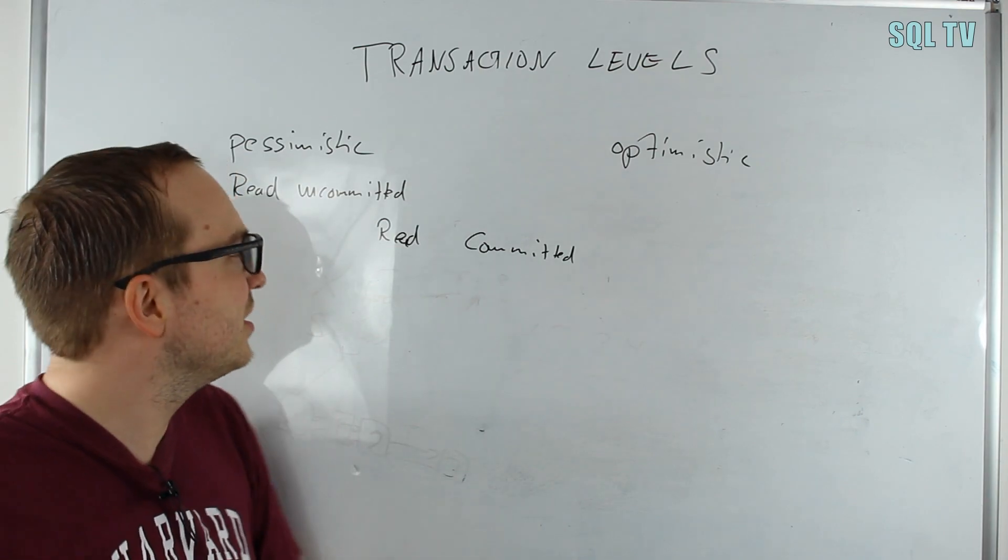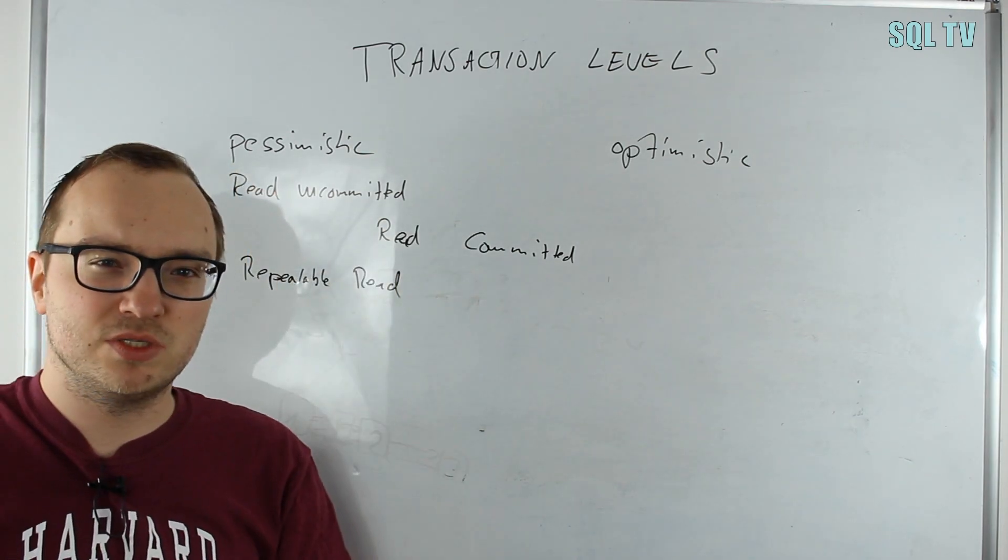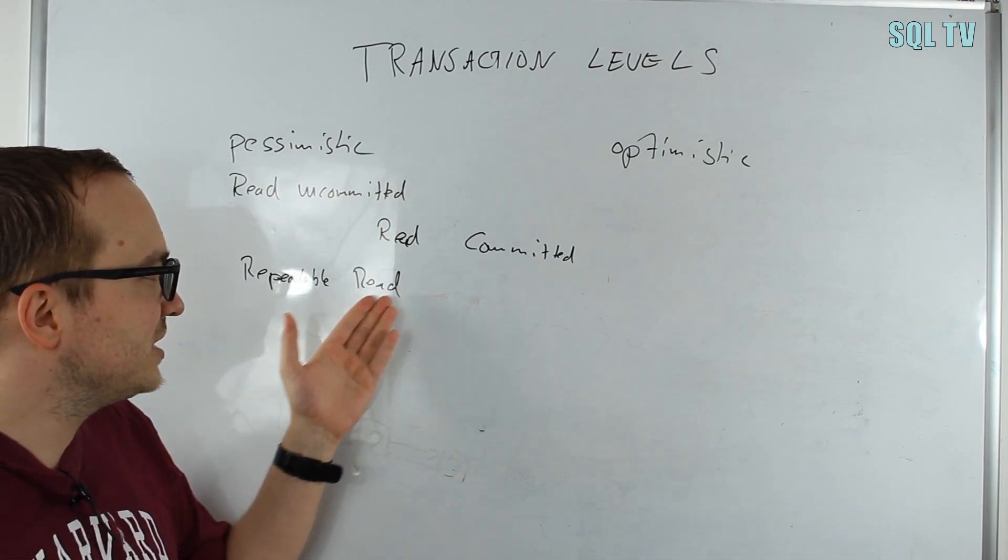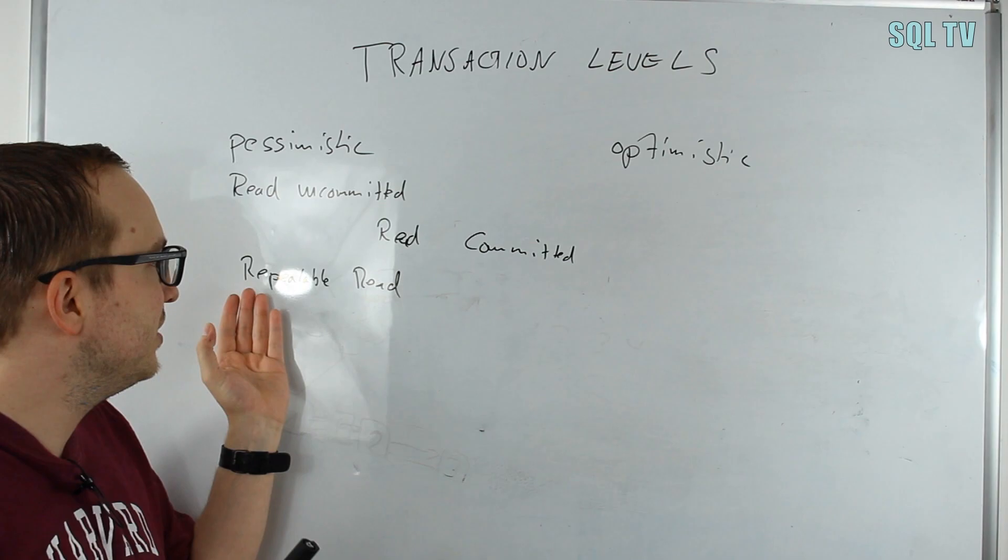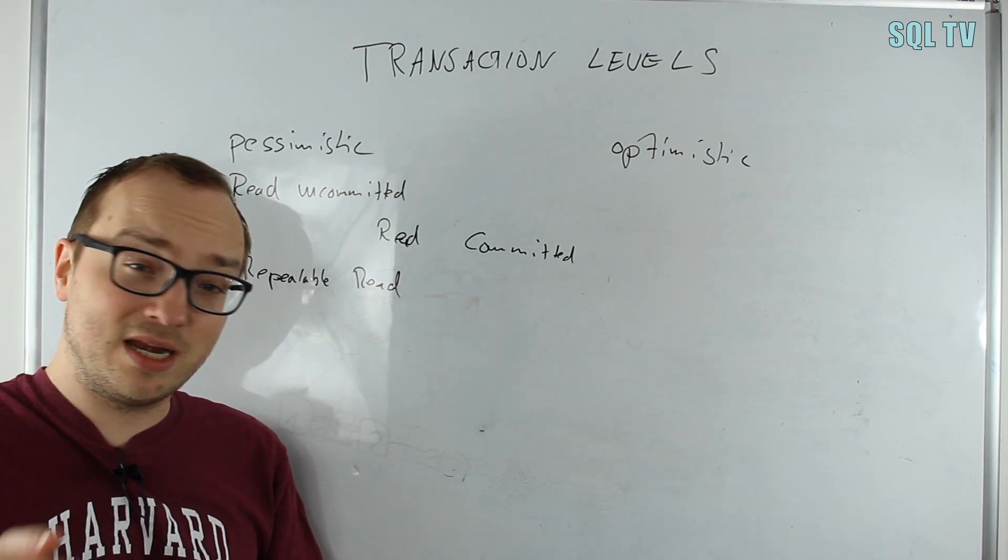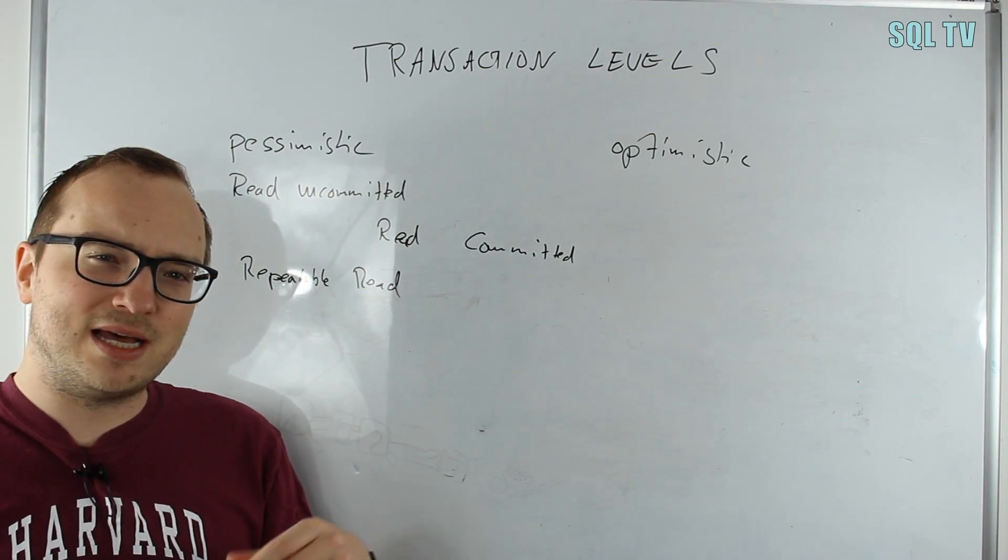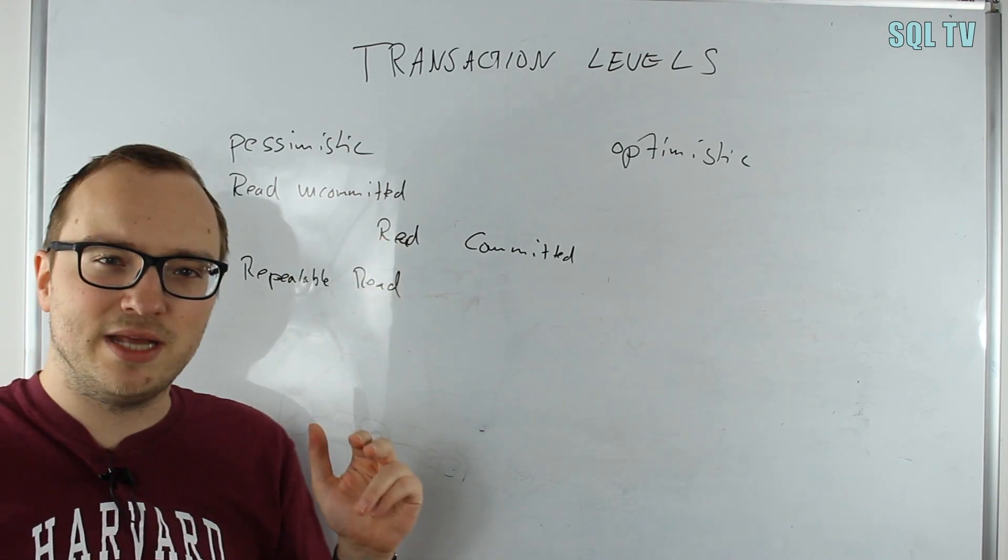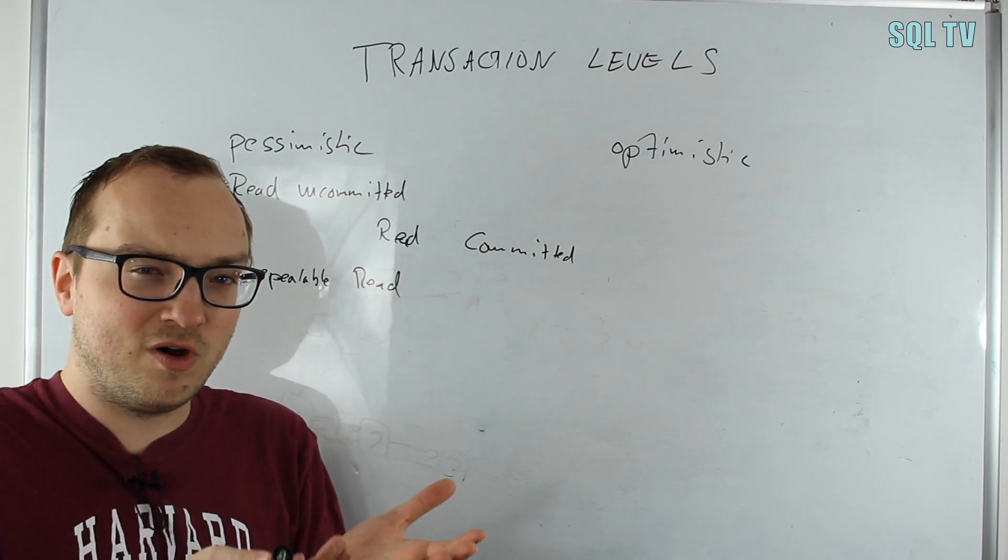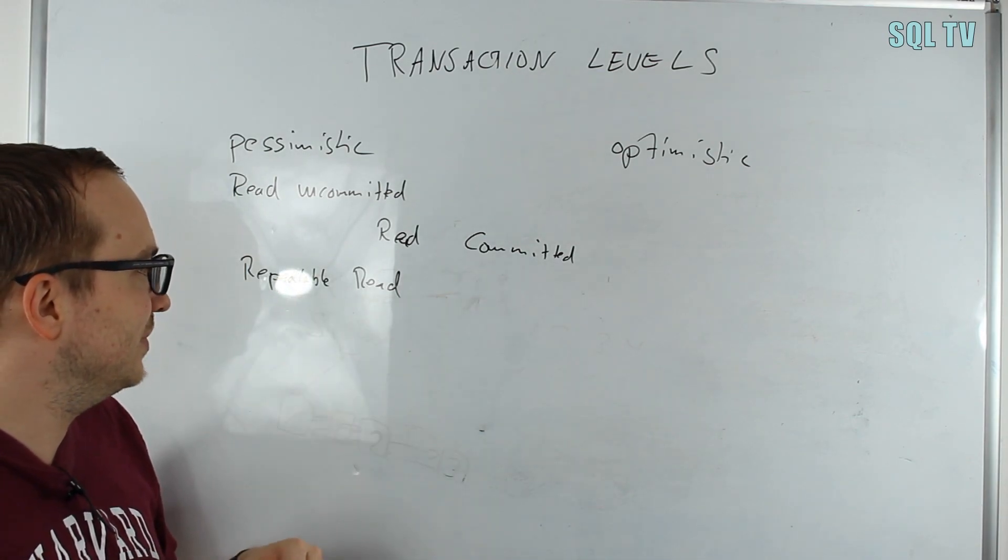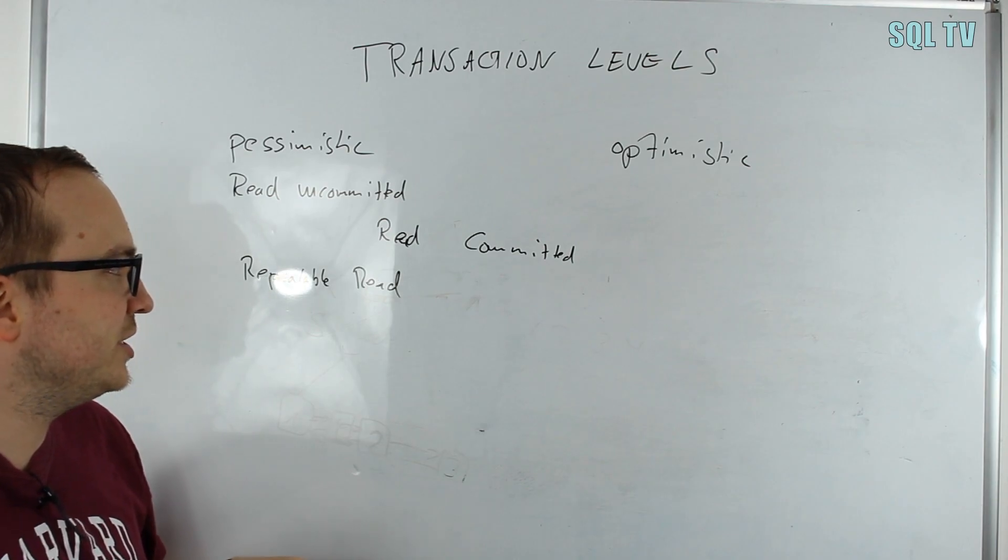The next one is also pessimistic: repeatable read. Repeatable read does the same thing as read committed in the pessimistic version. We have shared locks and exclusive locks. The difference is that the shared locks in read committed can be released as soon as the select statement is over, as soon as we retrieve the data. For repeatable read, we want to ensure that when we run a select query within a transaction more than once, we always have the same result. We ensure this by letting the shared lock last until the end of the transaction, not just until the end of the select statement. An exclusive lock in both has to be there for the time of the transaction. It's just read committed plus the shared lock lasts until the end of the transaction, so we cannot change the data just in between.